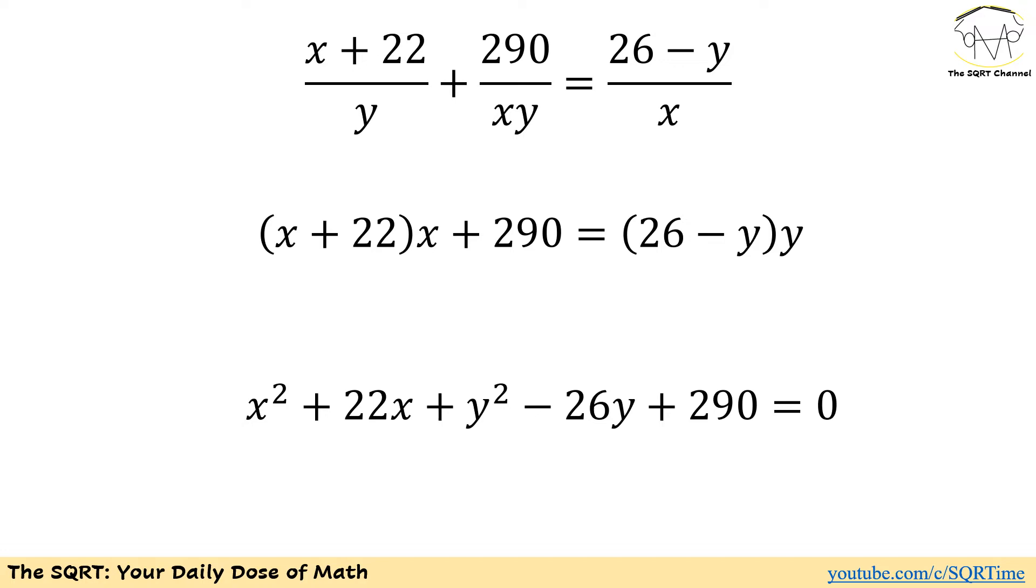And for the last one we are going to have (26 - y) times y. Remember we could multiply everything by xy because x or y equals to 0 is not going to be answer for the equation that we are trying to solve here.